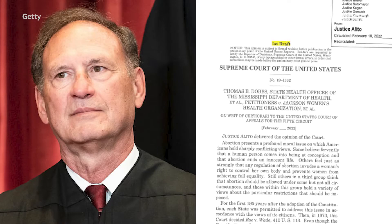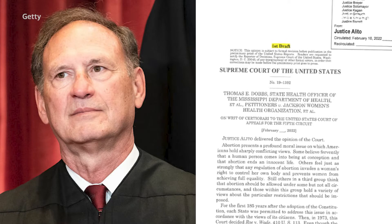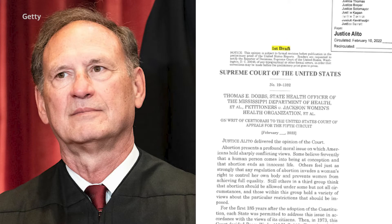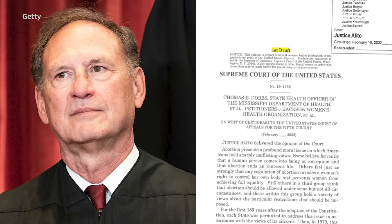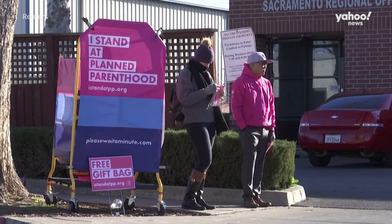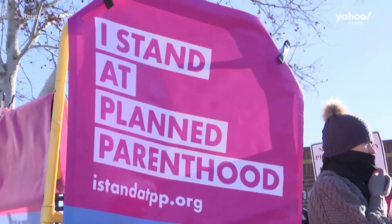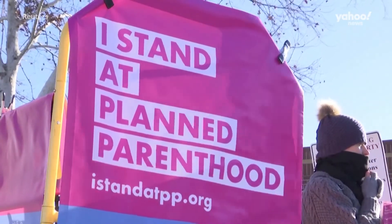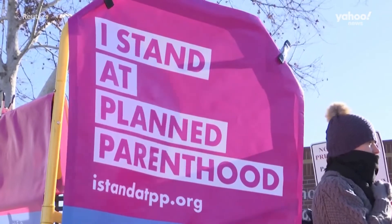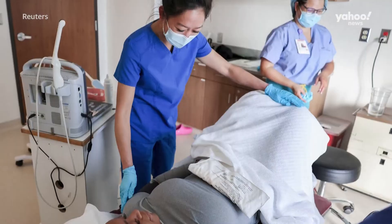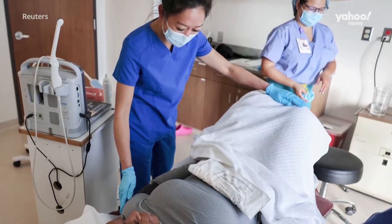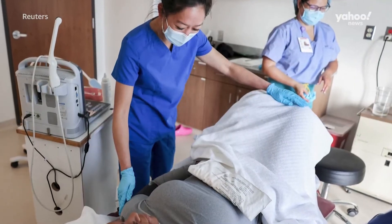In the draft written by Justice Samuel Alito, he wrote: 'The right to abortion is not deeply rooted in the nation's history and traditions.' If the draft opinion holds, all of Roe v. Wade will go, which means there will be no federal constitutional right for a woman to choose to have an abortion.